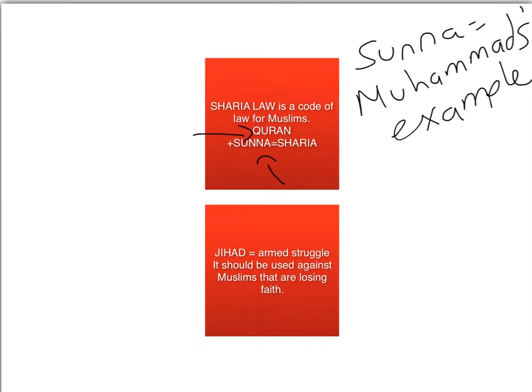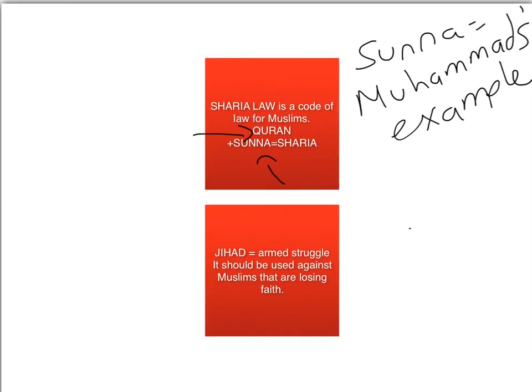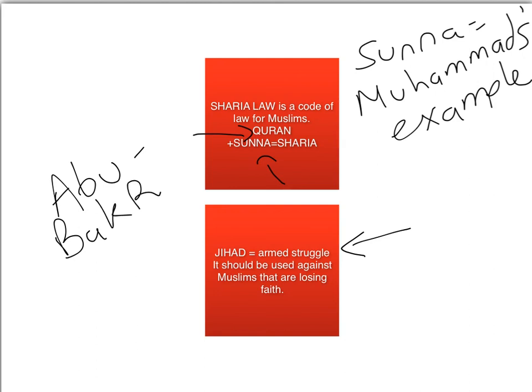Jihad is an armed struggle, and it should be used against Muslims that are losing faith. The initial idea of Jihad was not to try and fight or kill non-Muslims. It was in fact used by Abu Bakr — who is a Rightly Guided Caliph — in order to stop bad Muslims from being bad Muslims, to try and force them into being good Muslims and to keep their faith.